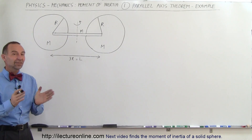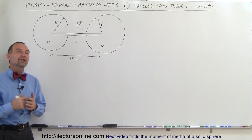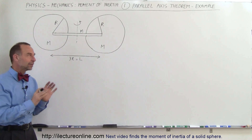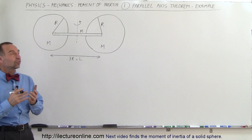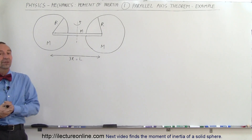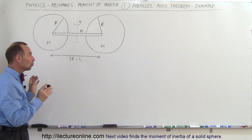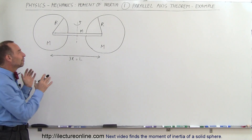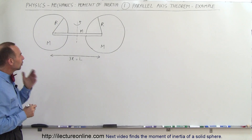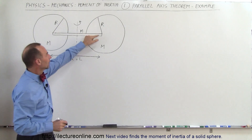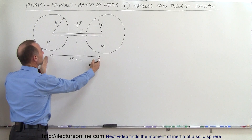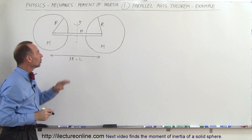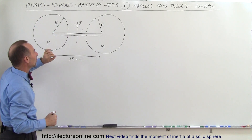Welcome to ElectronLine. In this example, as well as the next several videos, we're going to show you how to calculate the moment of inertia. In this example, we're going to illustrate how to use the parallel axis theorem, because it's a really handy theorem that would otherwise make this a very difficult problem. We have a bar whose length L is equal to three times the radius of each of the spherical masses attached to the bar.